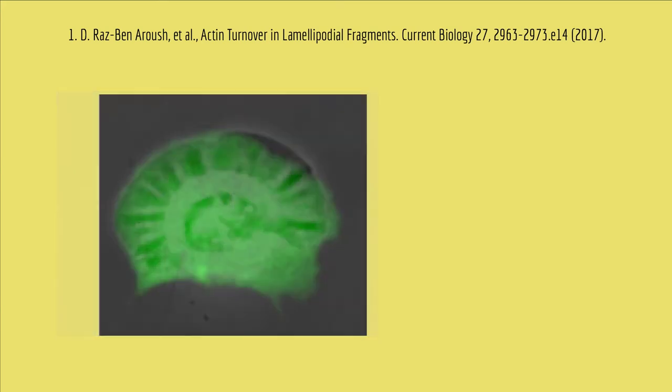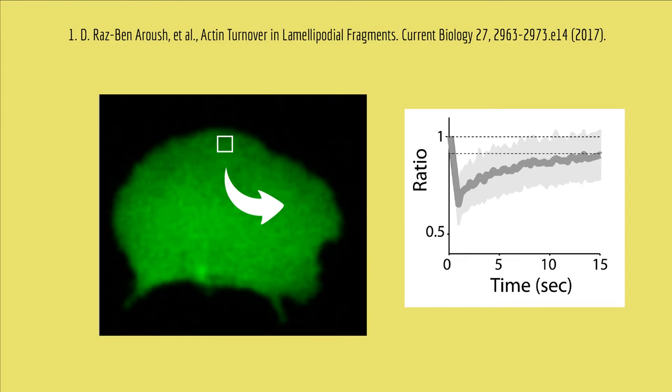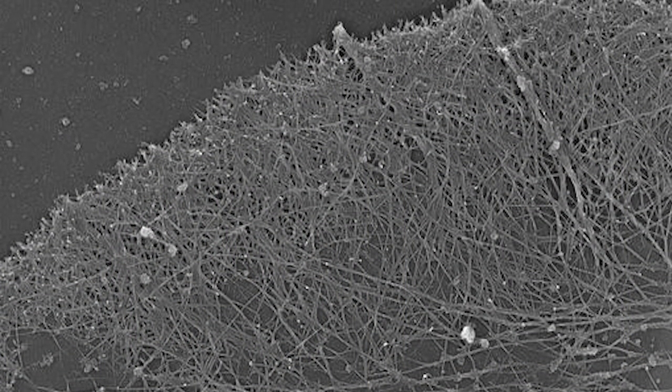Do you remember the fish keratocyte paper? Scientists used FRAP to measure the mobility of actin proteins inside crawling cells. While they expected to find highly mobile actin at the front of the cell, where the filaments are actively growing to make the cell move forward, they also found considerable mobility for the actin in the filaments farther back from the leading edge. That was surprising because it suggests that this filamentous network is actively being built up and broken down all the time while the cell crawls.